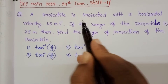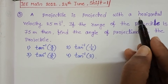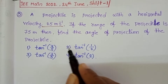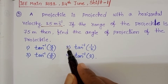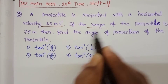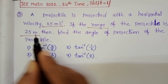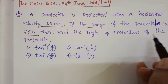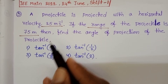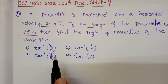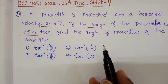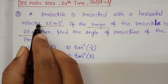A projectile is projected with a horizontal velocity of 25 meters per second. If the range of the projectile is 75 meters, find the angle of projection. This question is from the motion in a plane chapter.